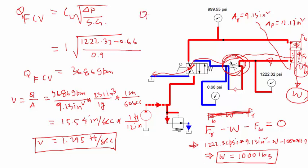If I decrease the flow, then the velocity decreases. It's the same principle as the meter in circuit. For meter in, the control valve is placed in the blank end. For meter out, the control valve is placed in the rod end.